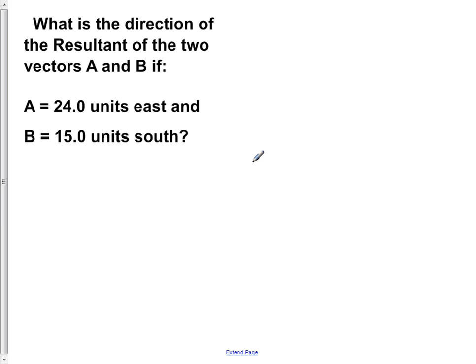What is the direction of the resultant of the two vectors A and B if A equals 24 units east and B equals 15 units south?